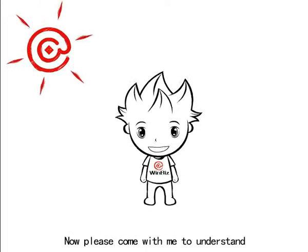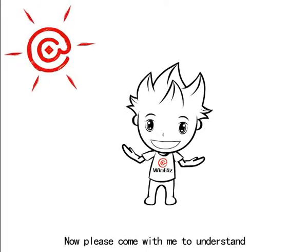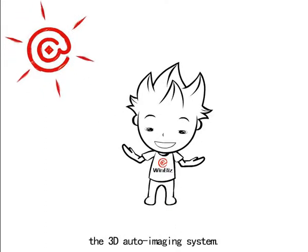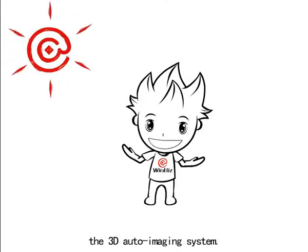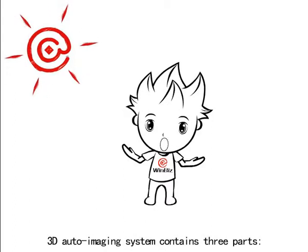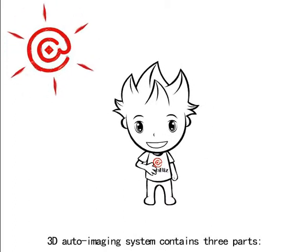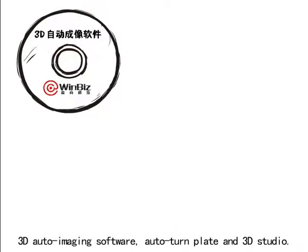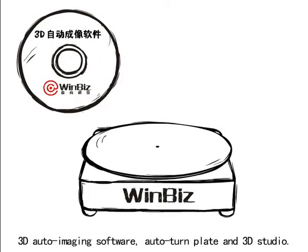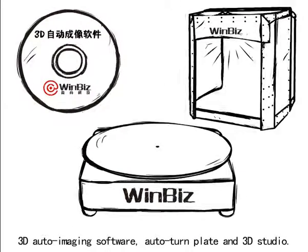You don't believe it? Now please come with me to understand 3D Auto Image System. 3D Auto Image System contains 3 parts: 3D Auto Image Software, Auto Turn Plate, and 3D Studio.